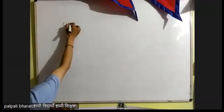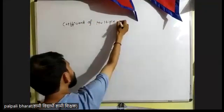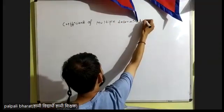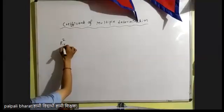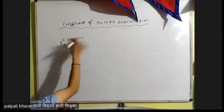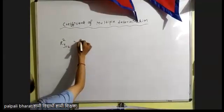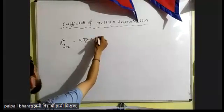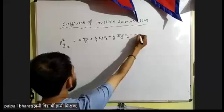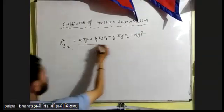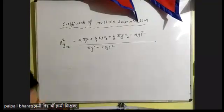Partition of multiple determination. R-squared y1.23 — a summation y plus b1 summation y x1 plus b2 summation y x2 minus n times Y-bar squared, divided by summation y-squared minus n times Y-bar squared. This is the coefficient of multiple determination.